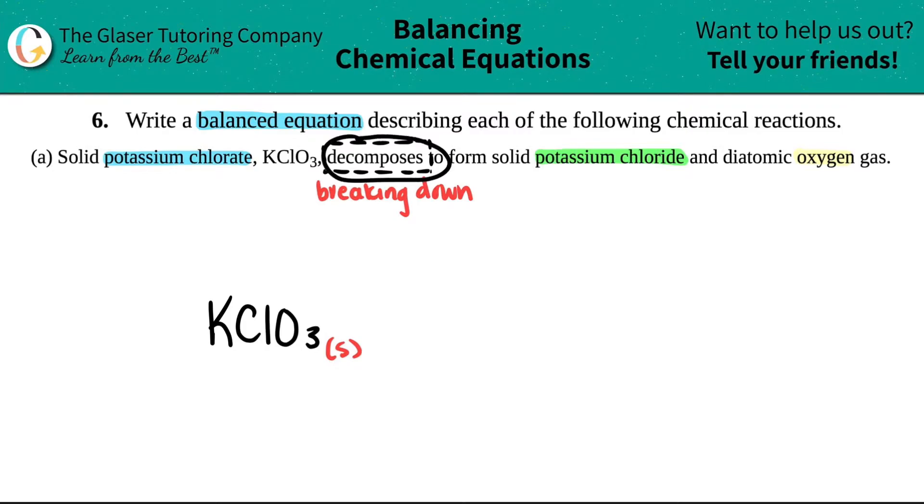Now, since it's doing something and you're going to be showing what it breaks down into - it's going to break down into potassium chloride and oxygen gas - you need to show that with an arrow. This is called a yield sign. This sign tells you that this will produce this over time. In this case, KClO3 broke down into its components because that's what a decomposition reaction is.